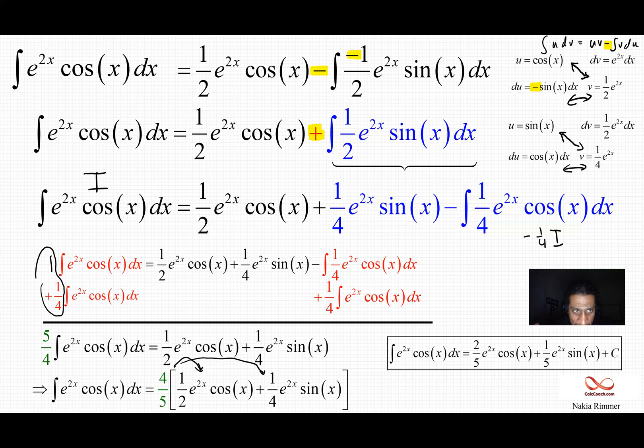It would have been a lot easier if this multiplier on x in the exponent of e wasn't a 2. So that's what made it a little more difficult. My recommendation is to handle it like I did here. Keep the constants inside the integral and it should be fine. All right. Thank you for watching.